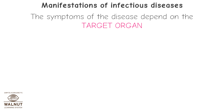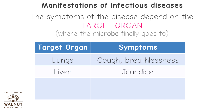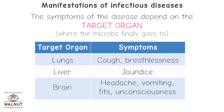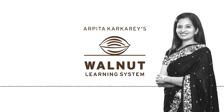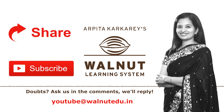The symptoms of the disease depend on the target organ where the microbe finally settles. If the target organ is the lungs, the symptoms are cough and breathlessness. If it is the liver, the symptoms are jaundice. If it is the brain, the symptoms are headache, vomiting, fits, and unconsciousness. If you like our videos, do share them and subscribe to our channel. For awesome quizzes, write to us. Keep watching and keep learning with Walnut!